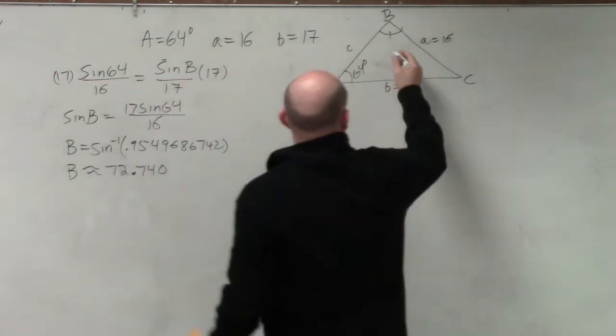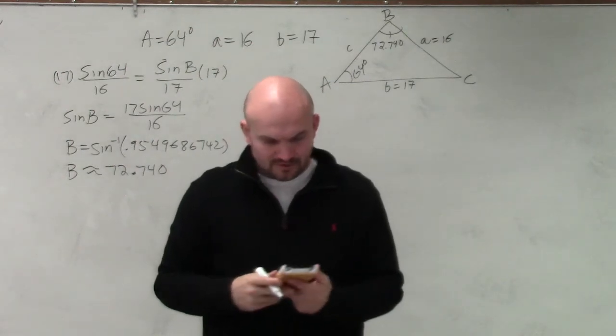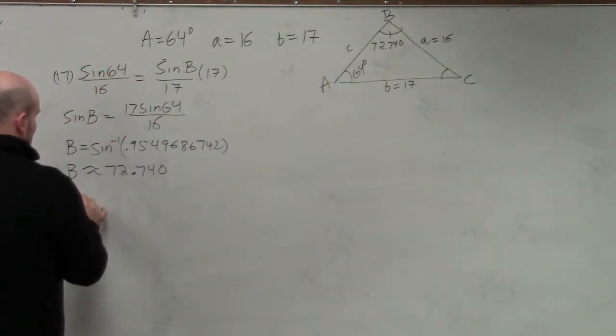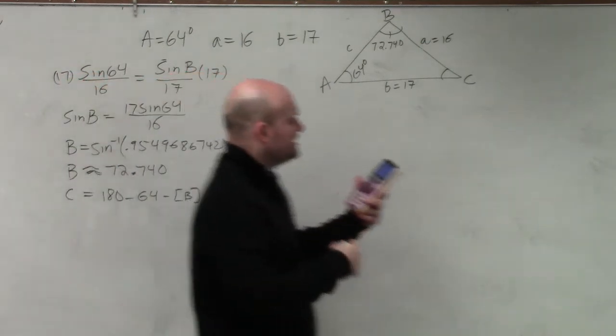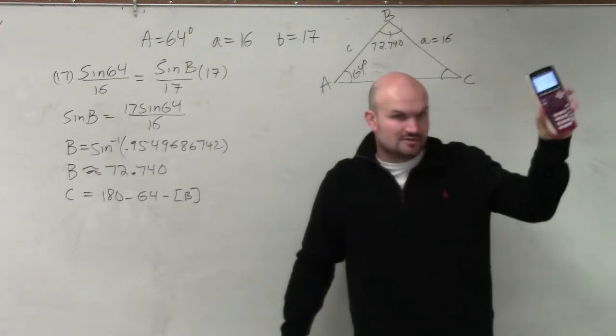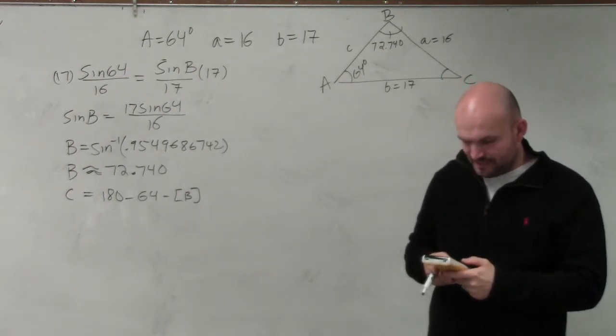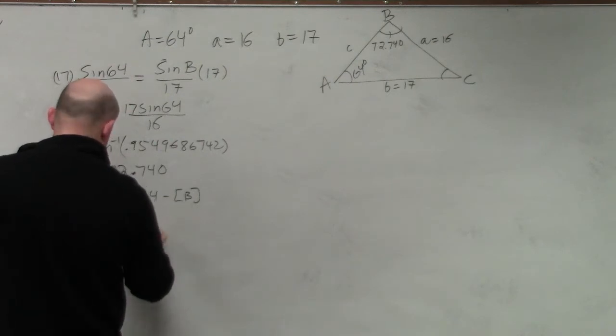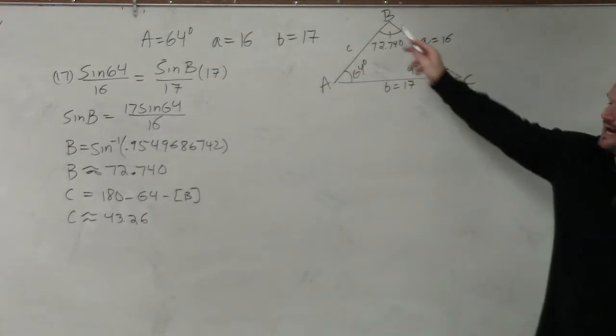Now, that's what B equals. But if I'm going to use B in any more of my calculations, I want to store this. So I'm going to store it as alpha B. That's important because I need to figure out what C is. And to figure out C, I am going to do C is going to equal 180 minus 64 minus B. So instead of typing my rounded answer, I want to type the full exact answer. That's why I store B altogether. So I do 180 minus 64 minus alpha B. And that gives me C, which is approximately 43.26.